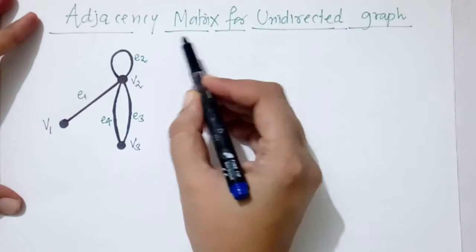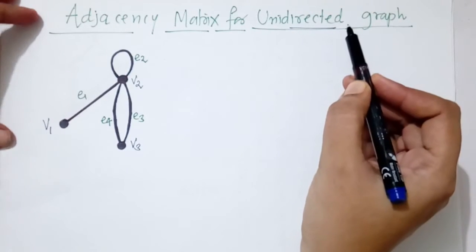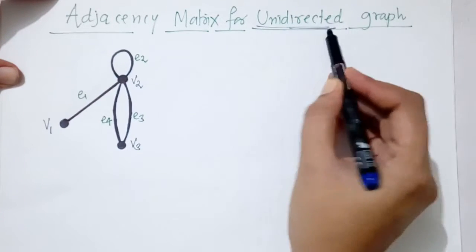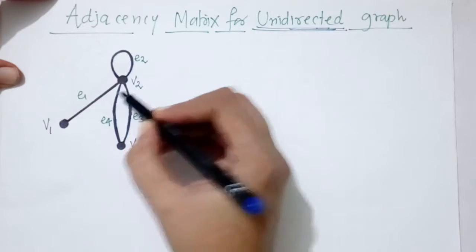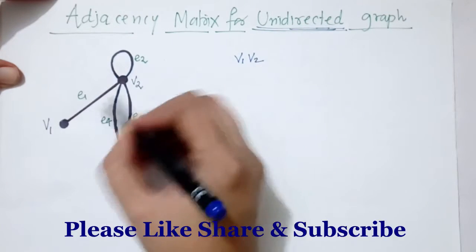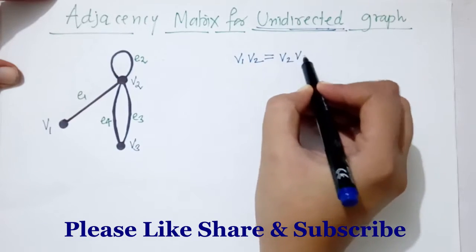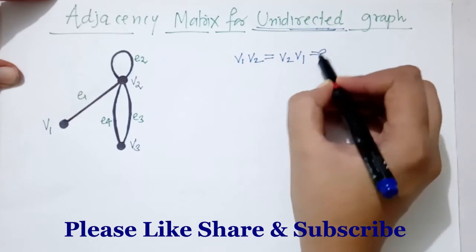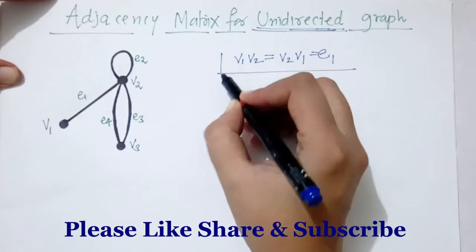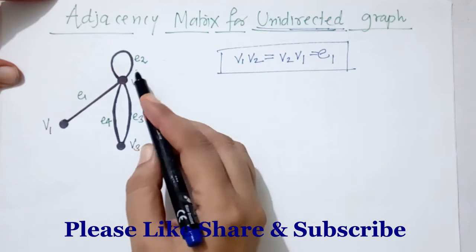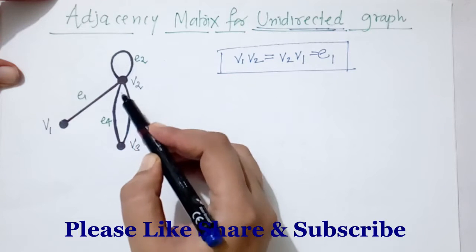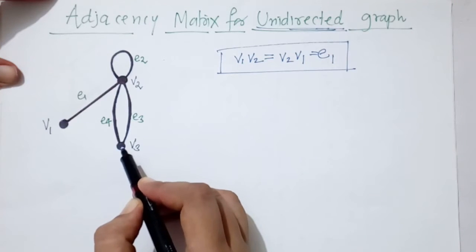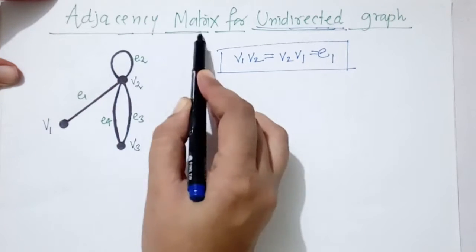Hello everyone, today we are going to see the adjacency matrix for an undirected graph. Here we have a graph with three vertices. This graph is undirected because edge v1-v2 equals edge v2-v1. This graph also has a loop and parallel edges, so this graph is a multigraph. Now we have to represent this graph as an adjacency matrix.